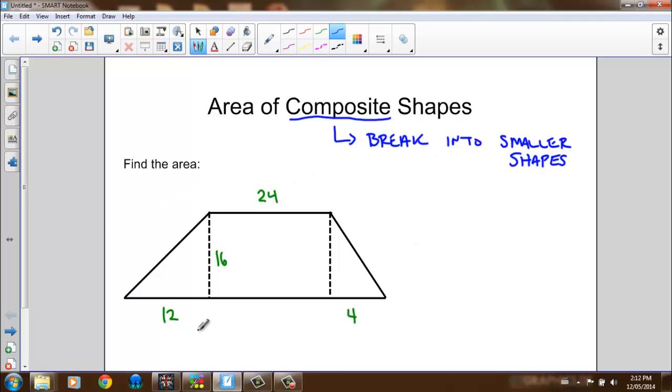For example, the shape that I have in front of you is made up of a triangle, a rectangle, and another triangle. Together we don't have a formula to quickly find the area of this shape, but when I break it apart into three different shapes, I can use my formulas for areas of triangles and rectangles to find three separate areas, and then I can add them all together.